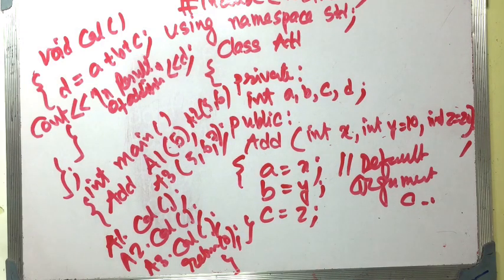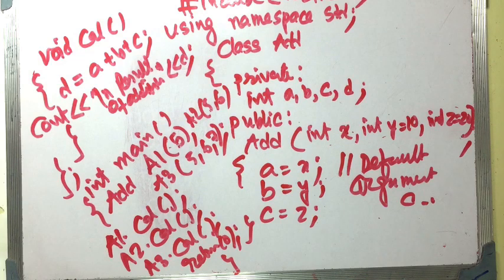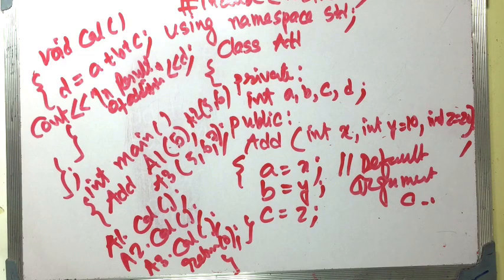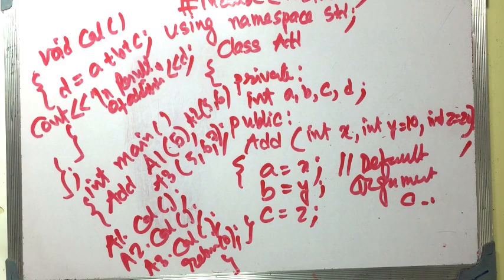This is the end of the program. When we have a default constructor and a parameter is missing, the constructor automatically uses the default value. That is why the default argument constructor is very useful.